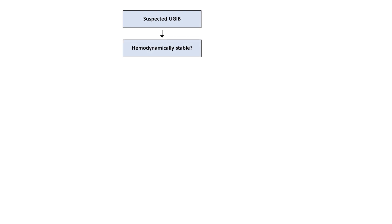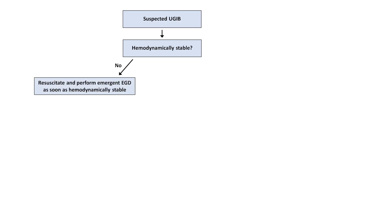Now onto the algorithms, starting with suspected upper GI bleeds. The first step is to determine if the patient is hemodynamically stable. If not, resuscitate them first and perform an emergent EGD as soon as hemodynamics are stable enough to survive the procedure. If they are hemodynamically stable up front, they still need an EGD, but not quite as emergently. EGDs are most likely to identify a source of bleeding if the bleeding is ongoing, so it's better to do it sooner rather than later — typically within 24 hours.